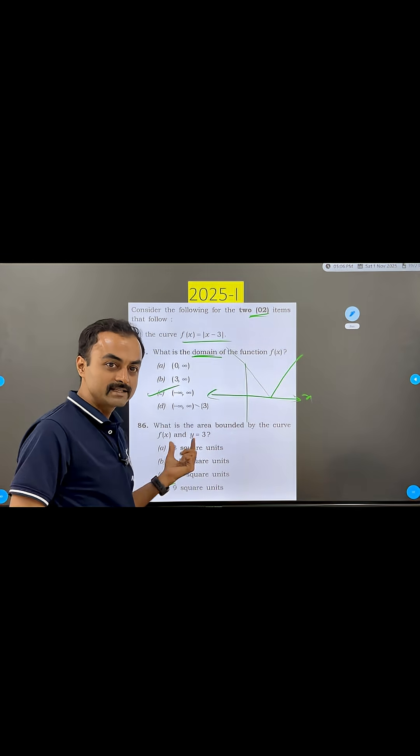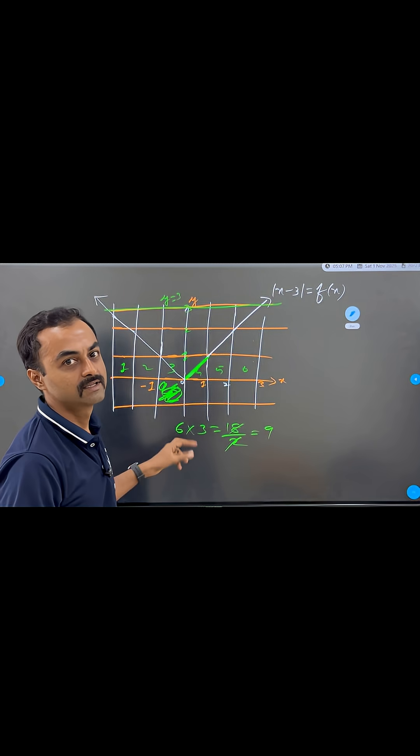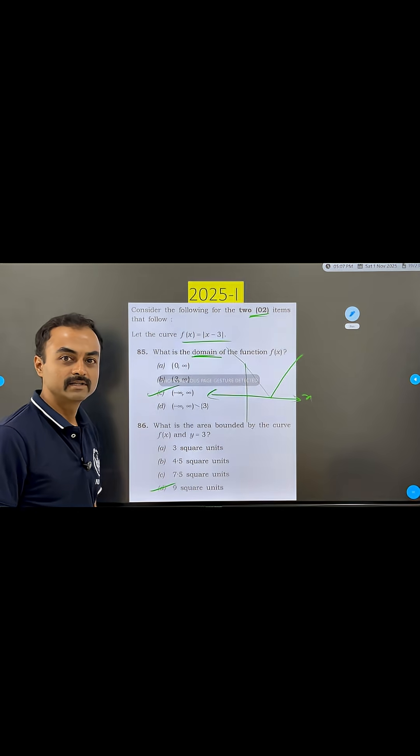Is that clear? Please understand the graph of this function properly. Without using the integration also, you can solve this. This is the simplest way to solve. Is that clear? Thank you.